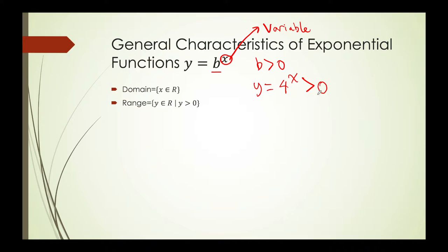I cannot have a power that is negative. Whenever we have b to the power of x, we're always going to notice that the power itself will be greater than 0.